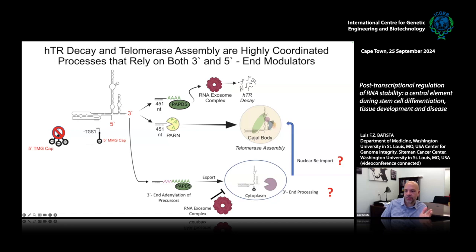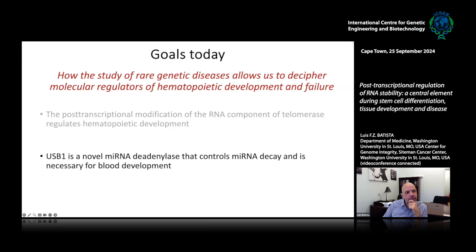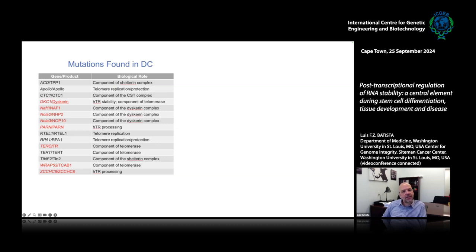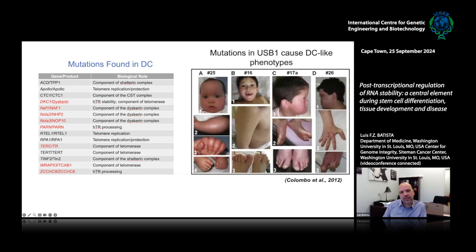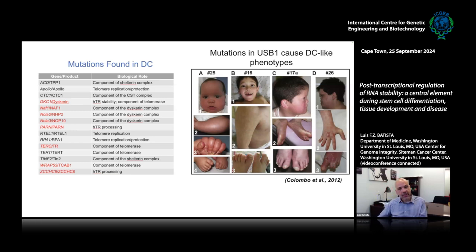Now I'm going to change subjects a little bit. Another major area of my lab is a gene called USB1. We started working on this gene because it was missing from the first table of genes mutated in dyskeratosis congenita — mutations in USB1 cause DC-like phenotypes. These patients come to clinical attention at a similar age, very early during childhood, with very similar phenotypes. USB1 stands for U6 biogenesis one; it was known to be a three to five prime exoribonuclease involved in the maturation of U6 snRNA by removing terminal uridines.